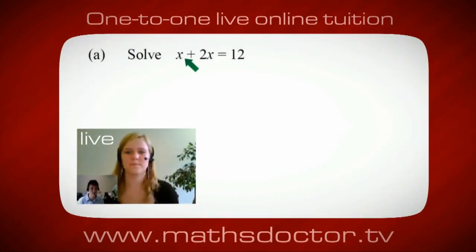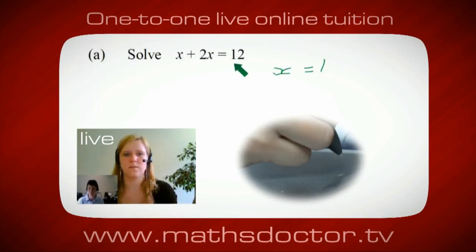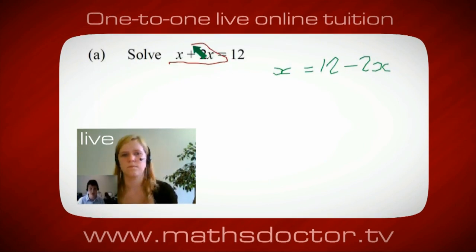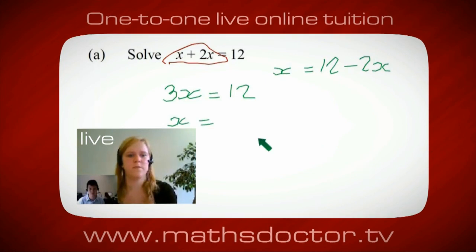Let's have a look at this one: solve x plus 2x equals 12. So what do you think you do first? Well, I want x on its own, so I would put x equals 12 minus 2x. A lot of the time we want to get x by itself, but what we want to do first is get all of these x's together. Can you see anything we can do — get all these together in one place? It's 3x, isn't it? Yes, absolutely. So 3x equals 12, and so x equals 4. Brilliant, spot on. Well done.